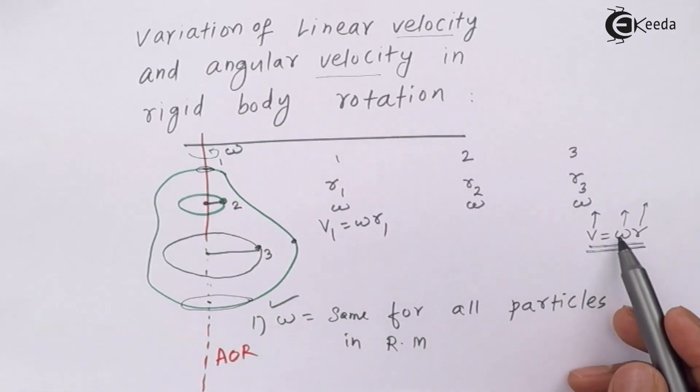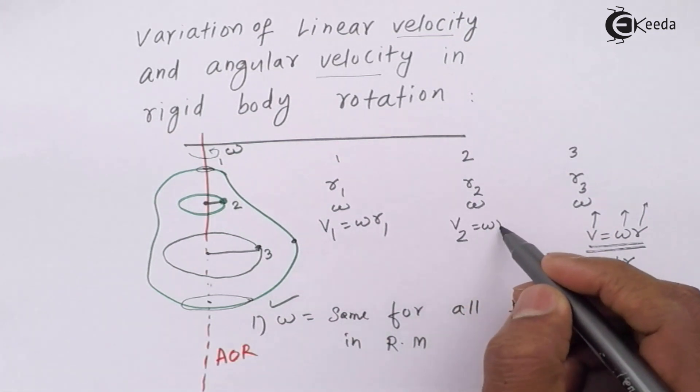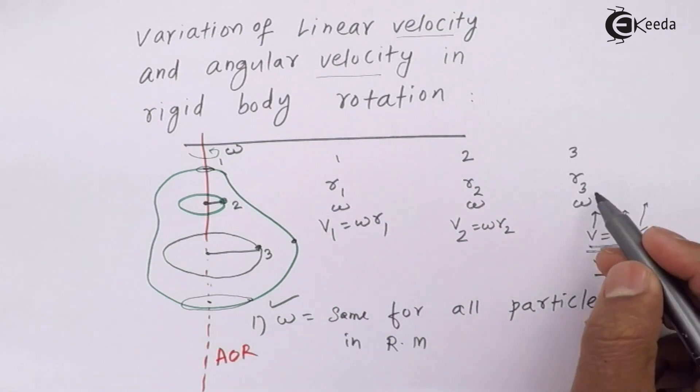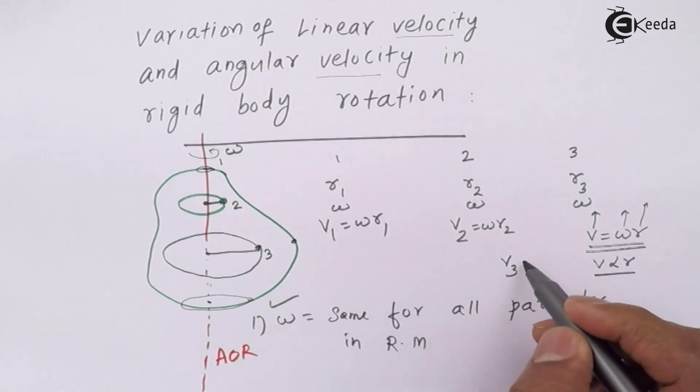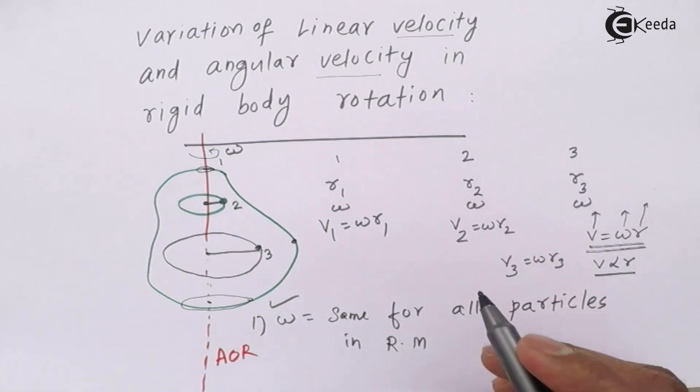Then v has to be different. Because omega has to be constant, if r increases, v also will increase. Because now v is proportional to r, greater r means greater v. V2 is omega r2, and here v3 will be omega r3. Omega being same, r3 is more, so v3 is more.